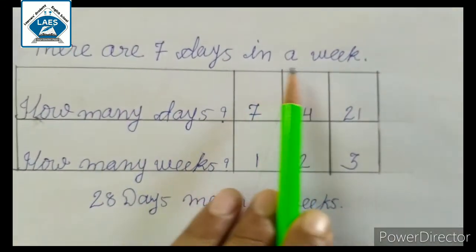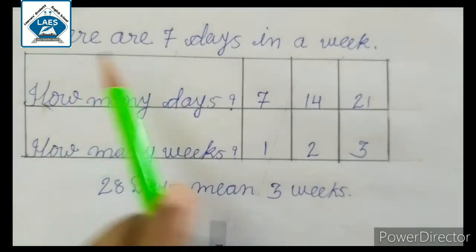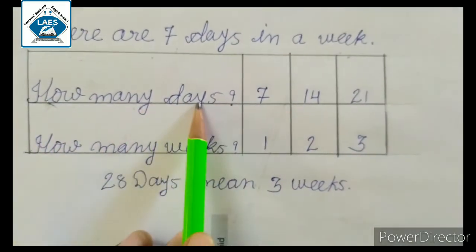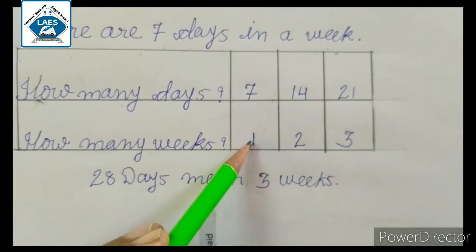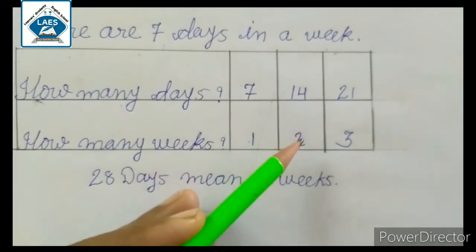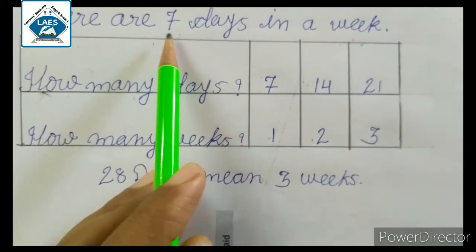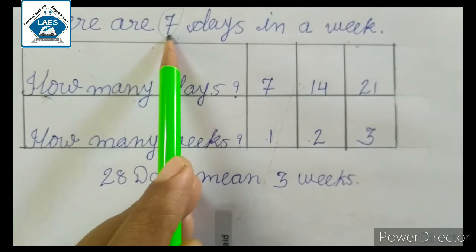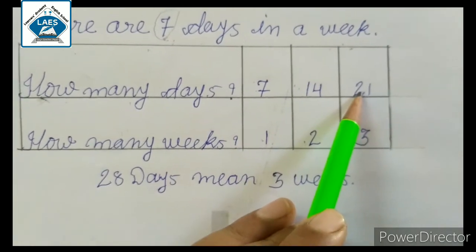There are seven days in a week — yeh to hamein pata hi hai ki one week mein kitne days hote hain: seven days. To there are seven days in a week. Jaise maine bataya, aise hum yahan pe do columns banayenge: how many days, how many weeks. To weeks mein one likhenge — one week means seven days, two weeks means fourteen days. Agar two weeks mein fourteen days aate hain, yeh hamein kaise pata chala? Maine aapko do methods bataye — usse hi try karenge. Yahan pe seven days le rahe hain, to hum seven ka table multiply mein le sakte hain. Multiplication table of seven: seven one's are seven, seven two's are fourteen, seven threes are twenty-one.